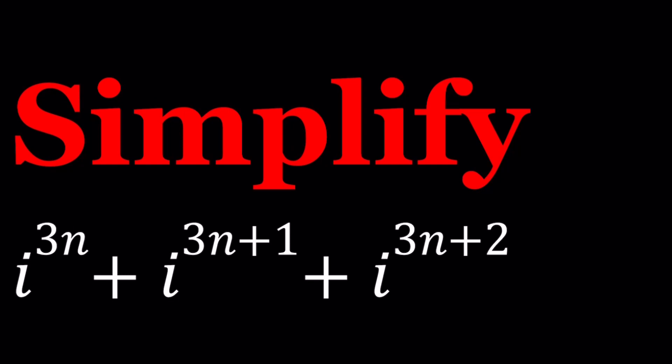we're going to be simplifying a sum with powers of i. We've done some powers of i before, and we're going to be doing more later, but this one is kind of a nice one. N is an integer, by the way, and we're supposed to simplify i to the power 3N plus i to the power 3N plus 1 plus i to the power 3N plus 2. So these are consecutive powers of i.